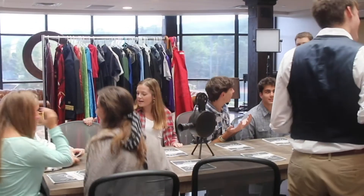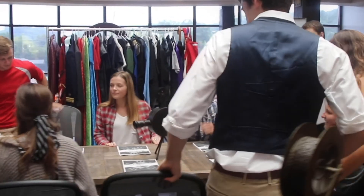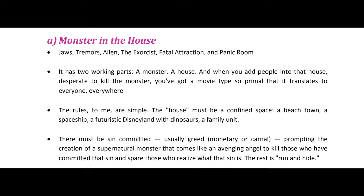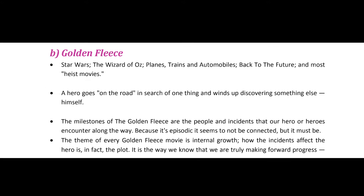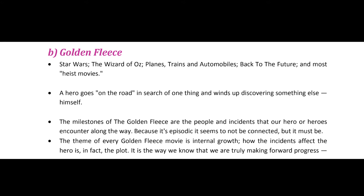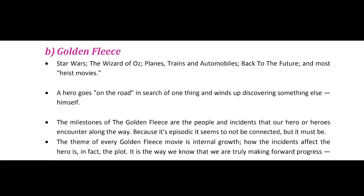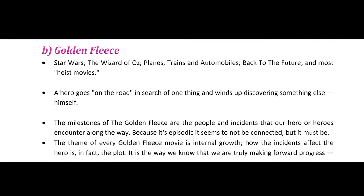In the book Save the Cat by Blake Snyder, he outlines 10 movie genres, but I'm going to briefly cover five of the most universal. The first is Monster in the House, where there is a confined universe and a threat within that world that the characters must confront. The second genre is called the Golden Fleece, where a hero is after a specific item but is transformed mentally and emotionally along the way. The Hobbit is a perfect example of this.